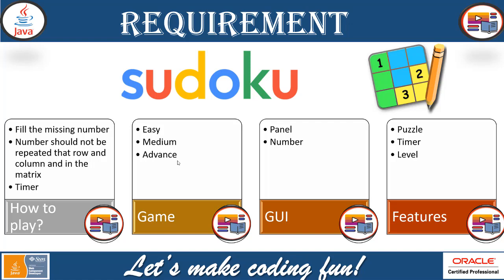The graphical user interface will need all kinds of panels and numbers since it is a kind of a square. So we need a frame, and we need to maintain the coordinates for the numbers — the location of the missing numbers.